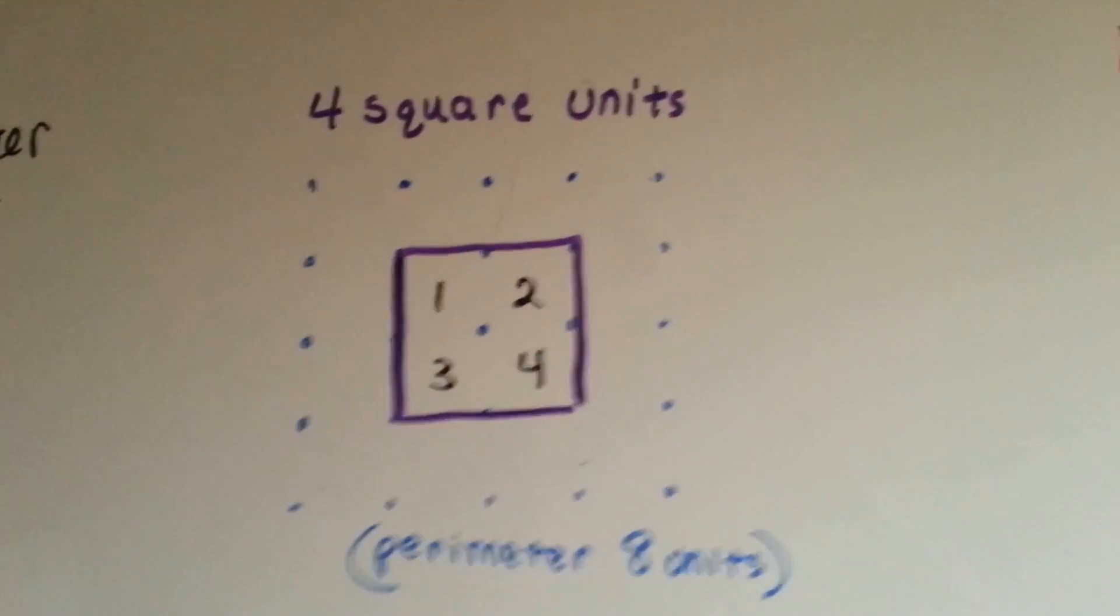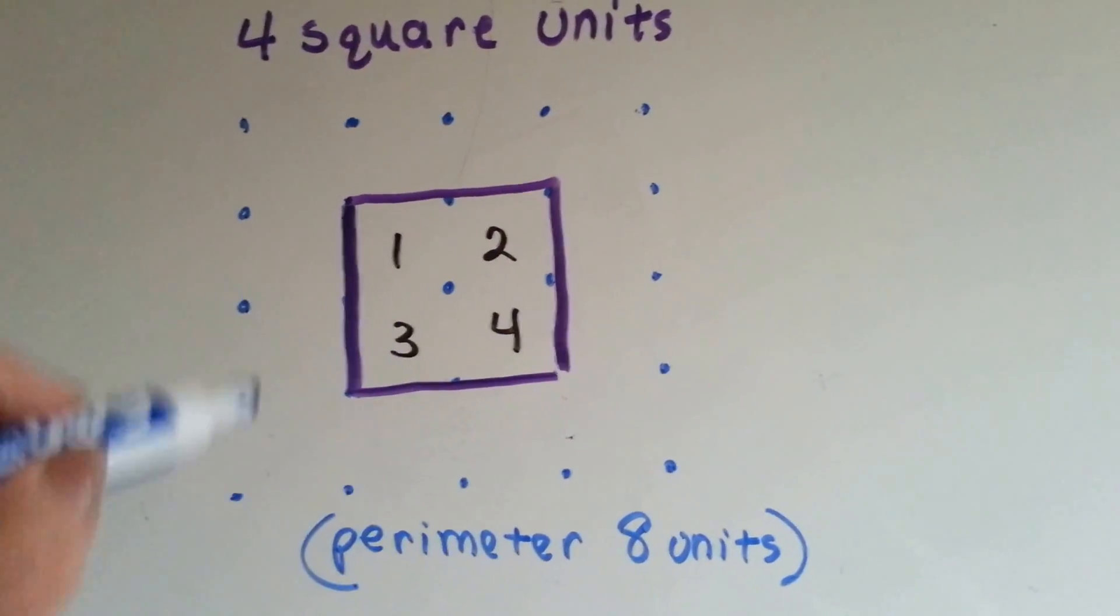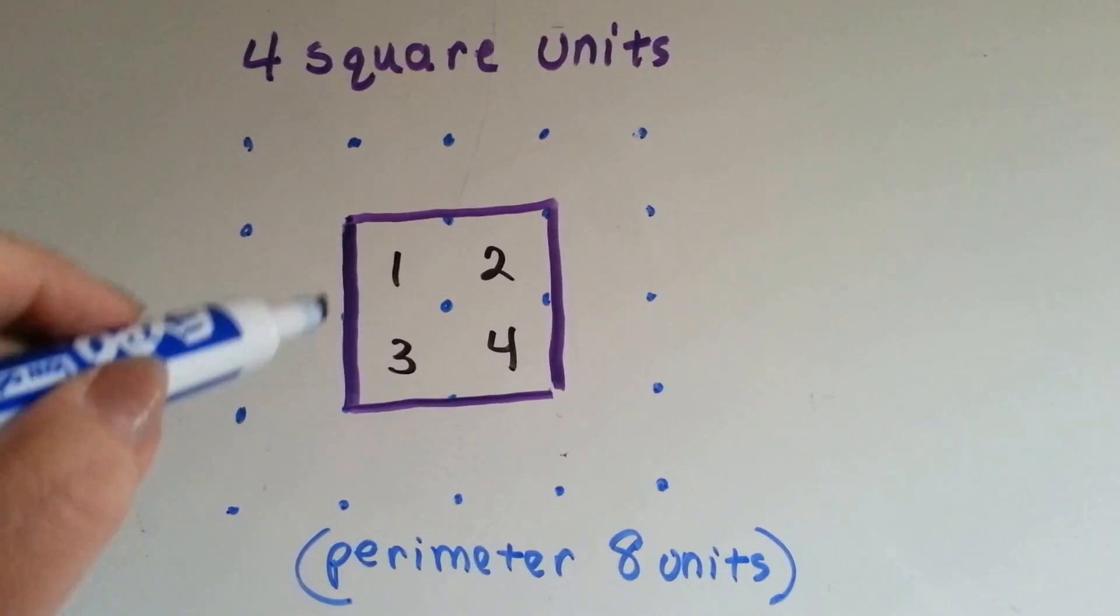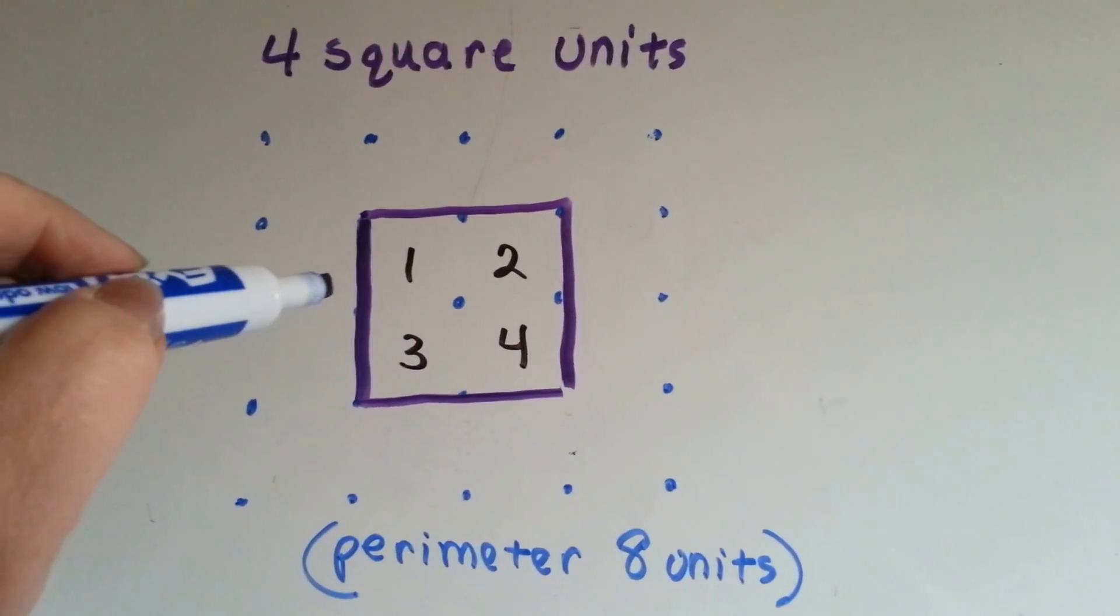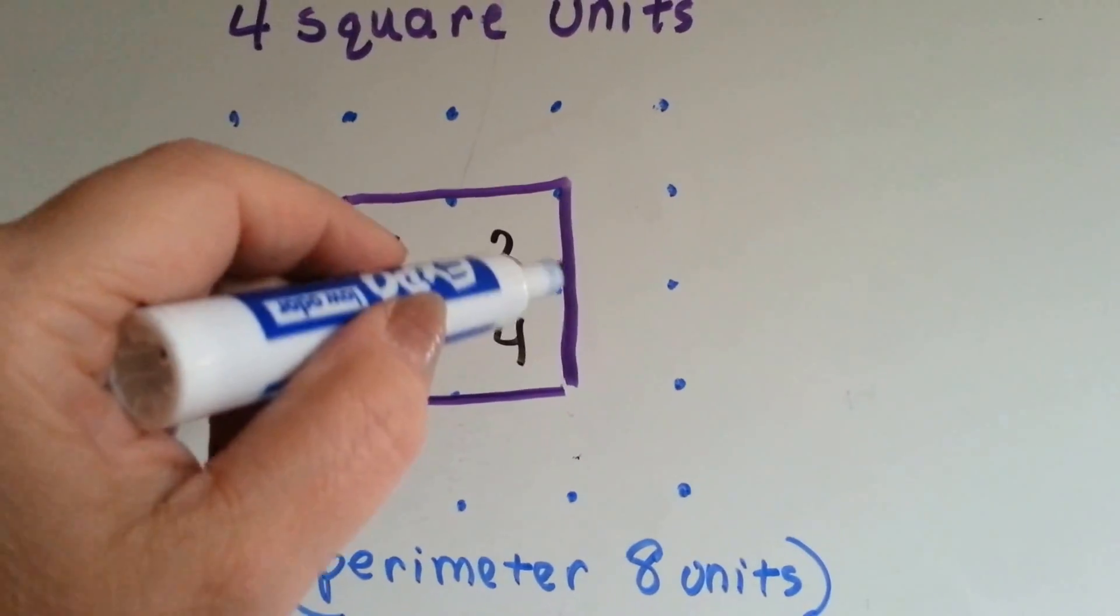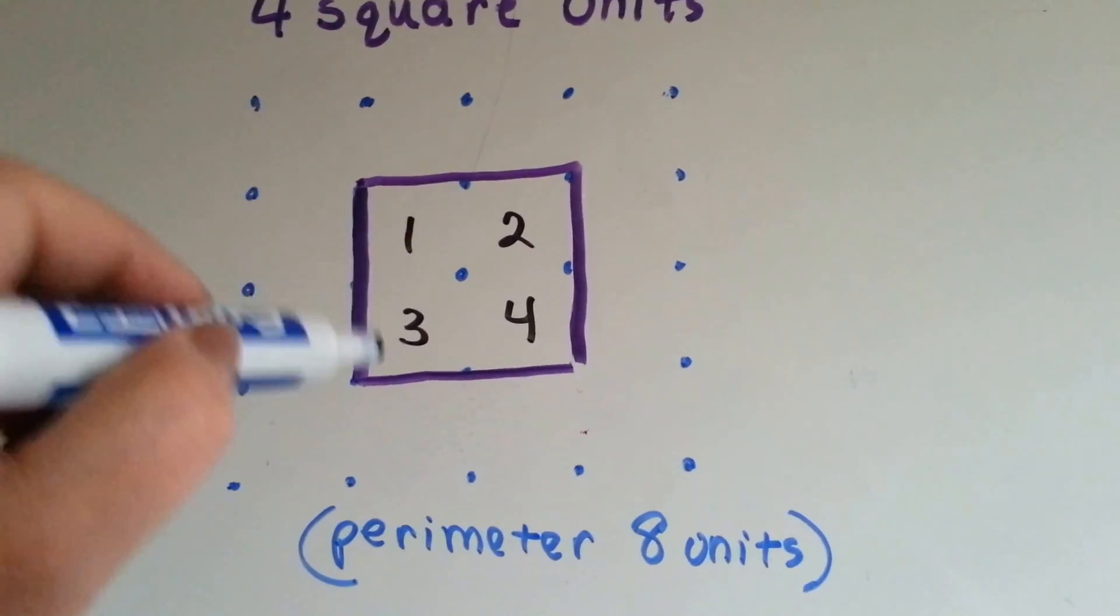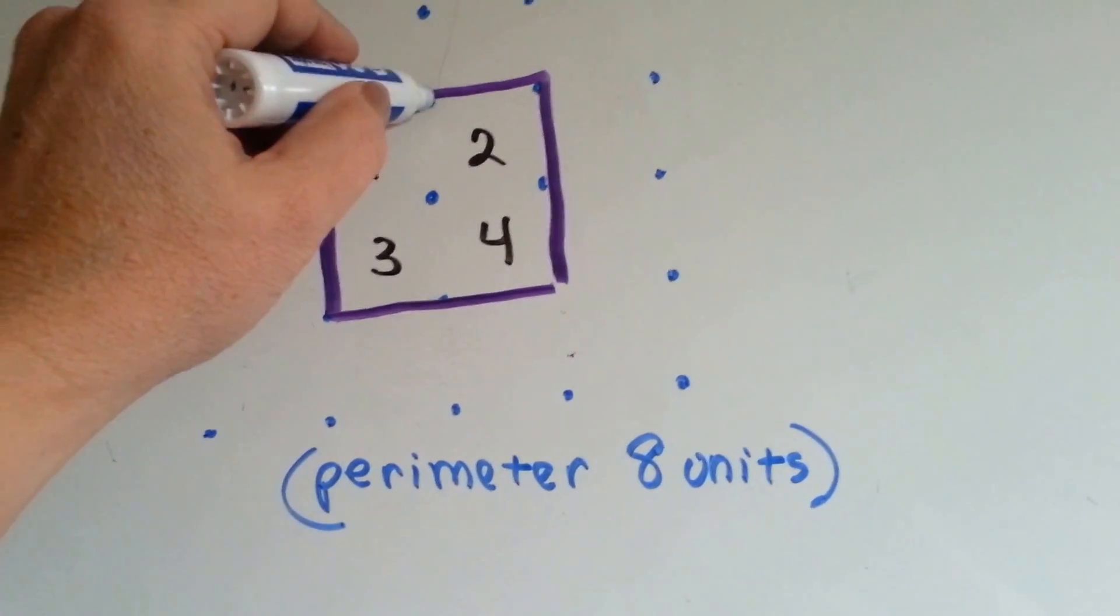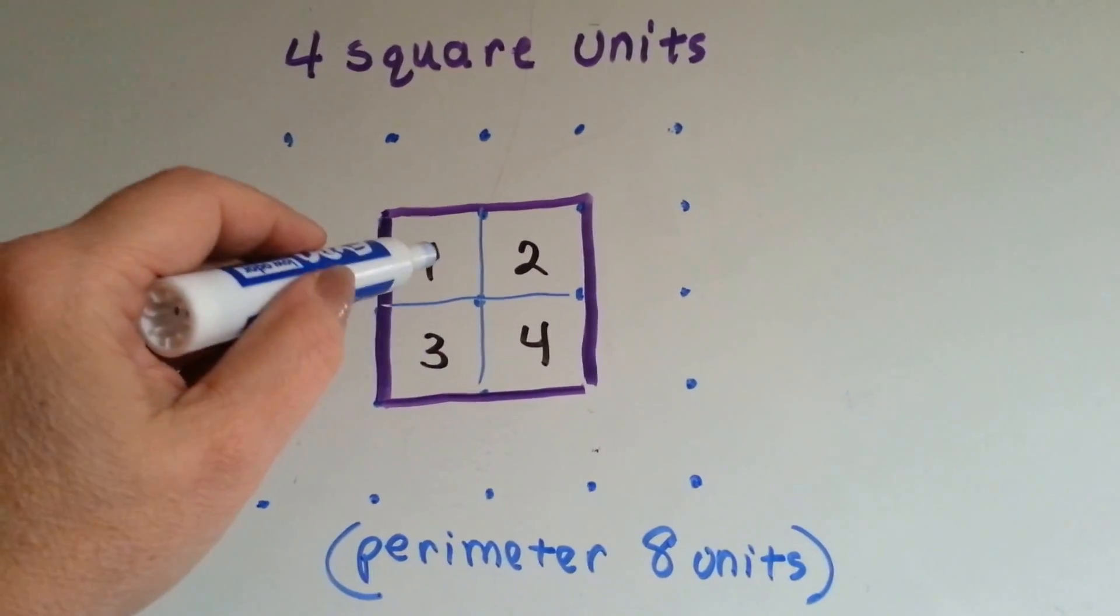Okay, so let's look at this one. Here's a bunch of dots that are one unit apart from each other. And this square that I made is four square units. I made a line here, a line here, here, here, here, here, see? So what I did was, by doing that, I made a shape with four square units.